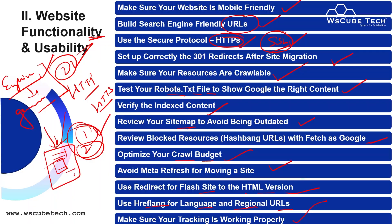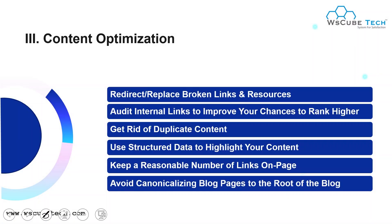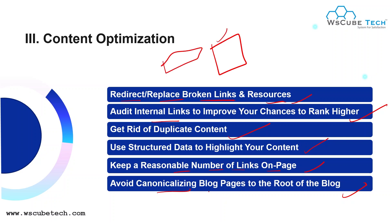The third part is content optimization. We redirect or replace broken links and resources, remove broken web pages, and audit internal links to improve your chances to rank higher. We get rid of duplicate content, use structured data to highlight content, keep a reasonable number of links on a page, and avoid canonicalization issues. Canonicalization means having two URLs pointing to the same single product — in that case, you choose only one canonical link for that product.